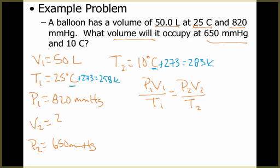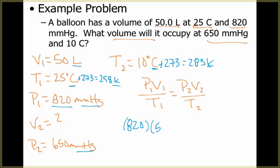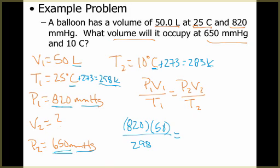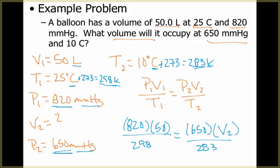Now I'll substitute into the equation. Both pressure values are in millimeters of mercury, and both temperature values are in Kelvin, so no additional conversions are needed. P1 is 820 mmHg, V1 is 50 liters, T1 is 298 K. P2 is 650 mmHg, V2 is what I'm solving for, and T2 is 283 K. Cross-multiplying and solving for V2 gives approximately 59.9 liters.